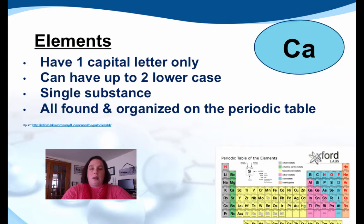Let's do a quick review on elements. Elements only have one capital letter, though they can have up to two lowercase letters. They are a single substance and they're all found and organized on the periodic table. Take for instance CA, which is calcium. Calcium only has one capital letter, so you know it's an element. You can also find it on the periodic table.